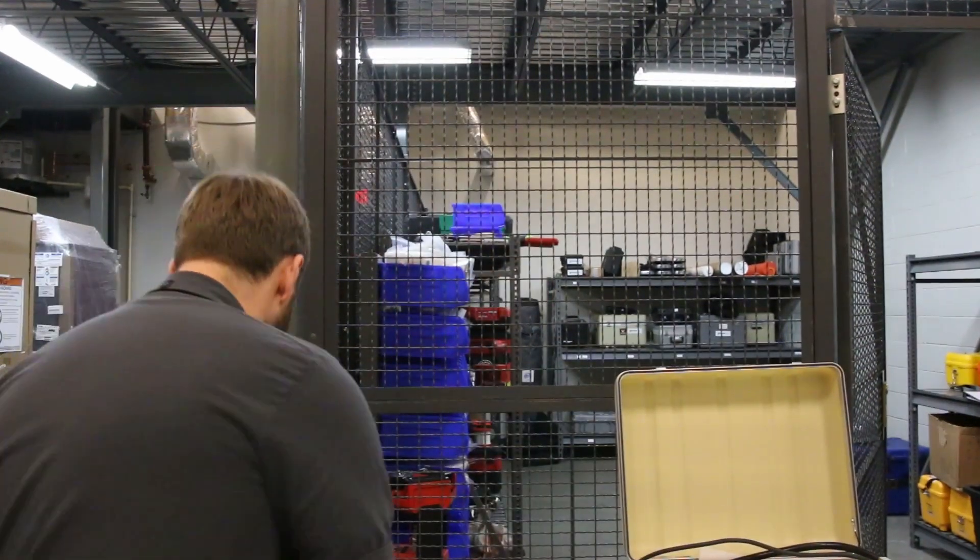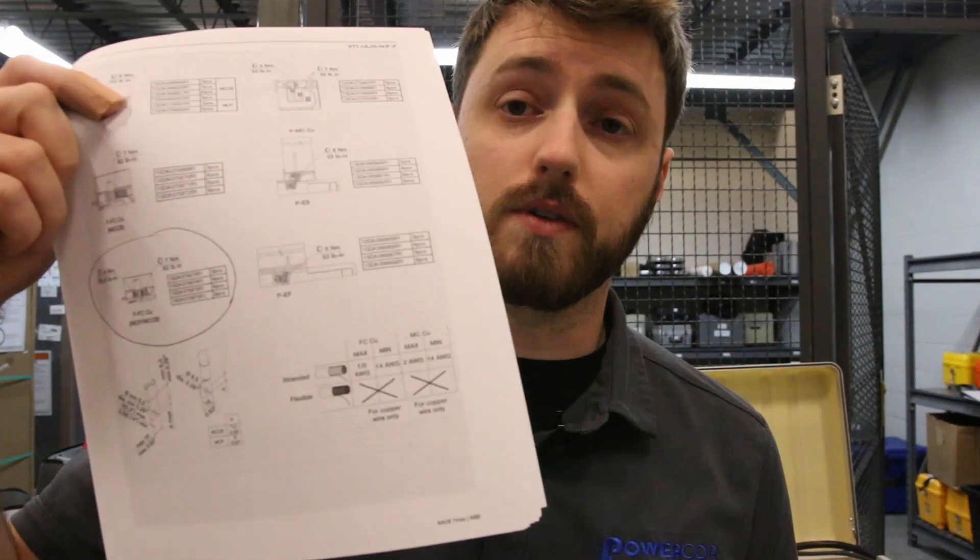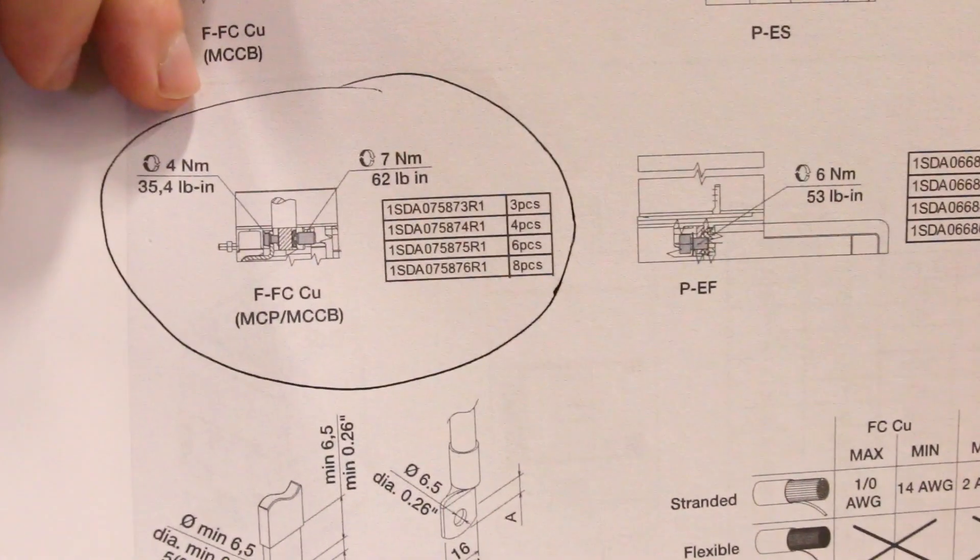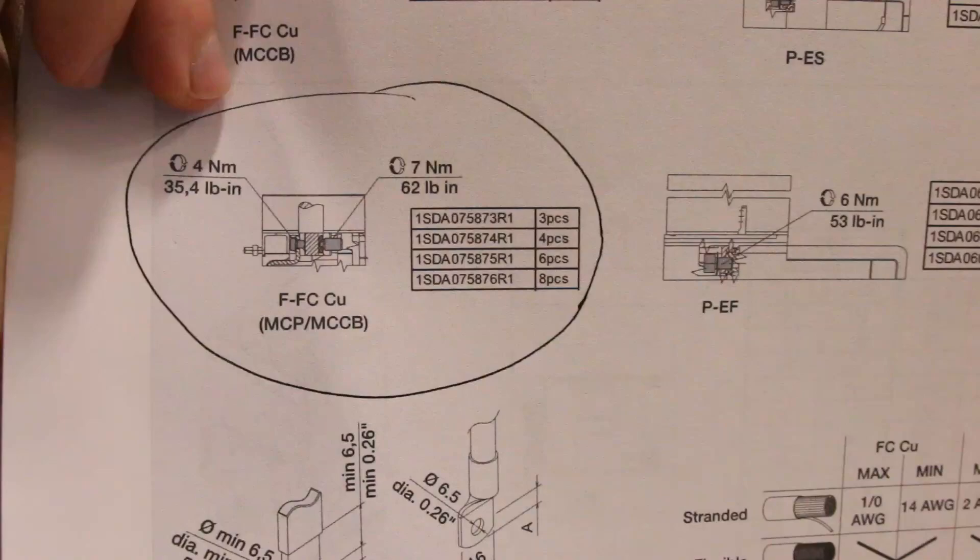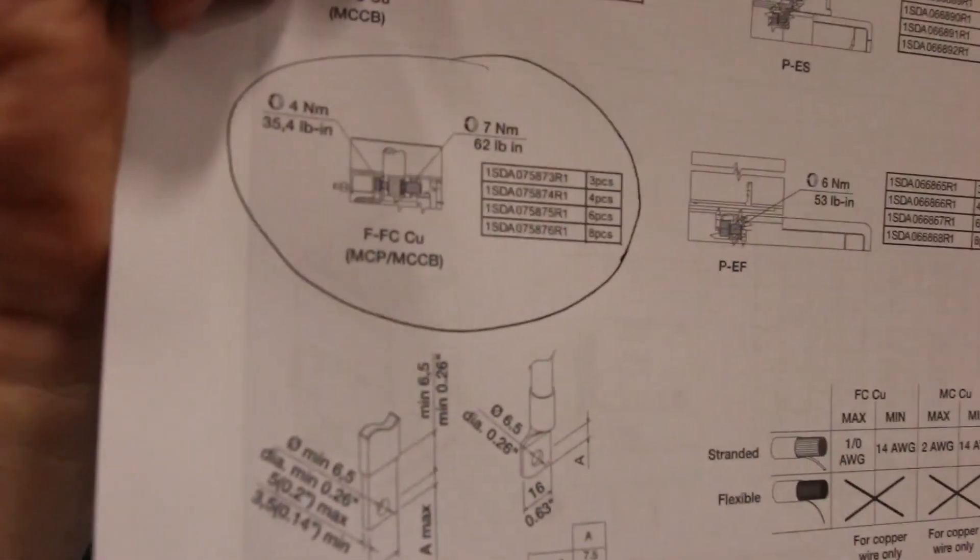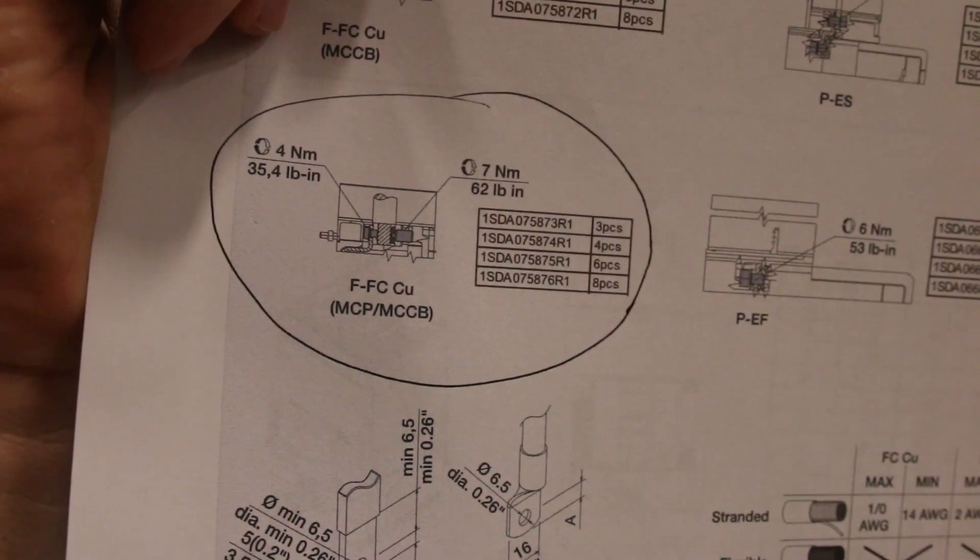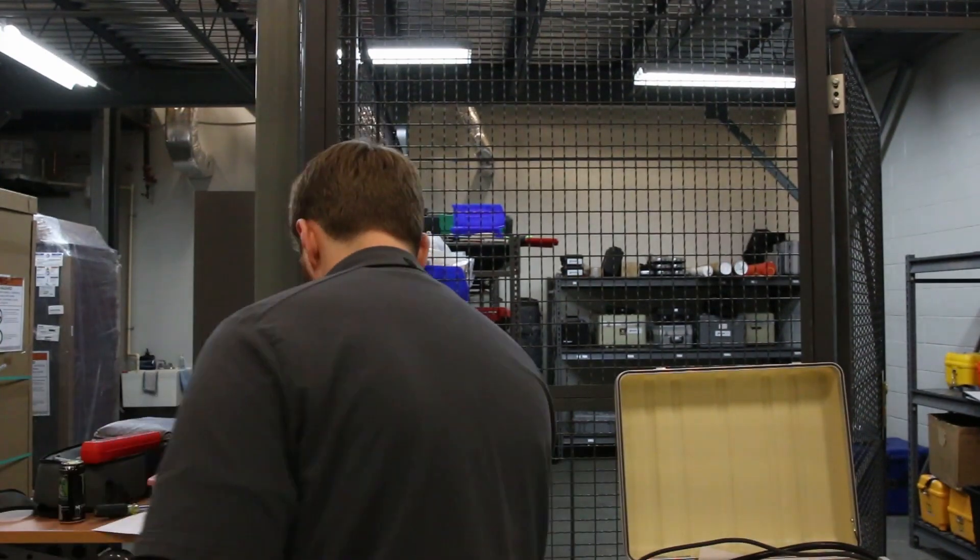So, if conditions were perfect, per the installation manual for the T-Max XT1H, see here, I've got our lug kit circled. The torque value for the little set screw right here that holds the lug on should be 35.4 inch pounds. We're going to test that, so I don't think that's right.